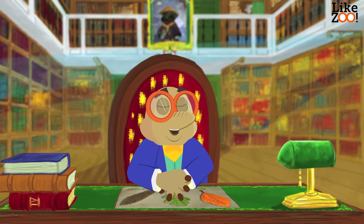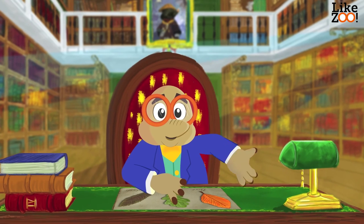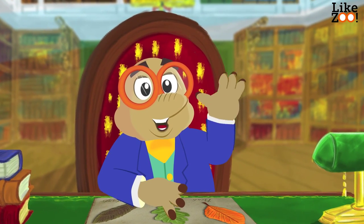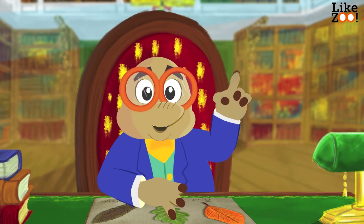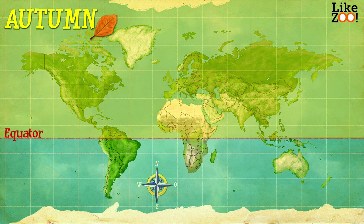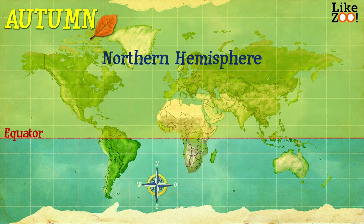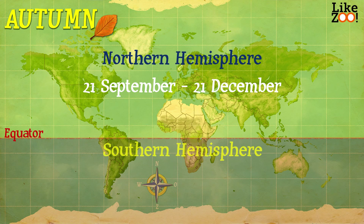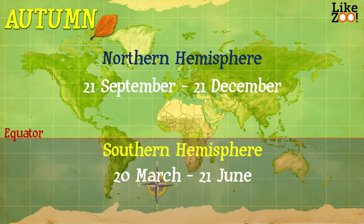I always get a little melancholic when autumn starts. But what is autumn and what happens to nature? Autumn is the third season in the year. In the Northern Hemisphere, autumn starts on September 21st and ends on December 21st. In the Southern Hemisphere, autumn starts on the 20th of March and ends on June 21st.